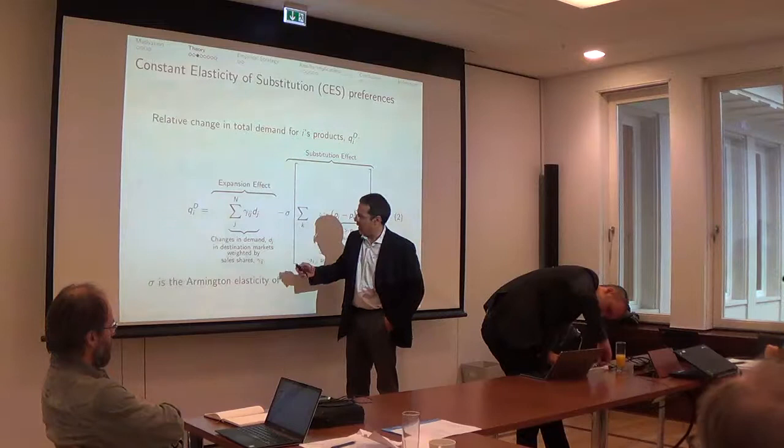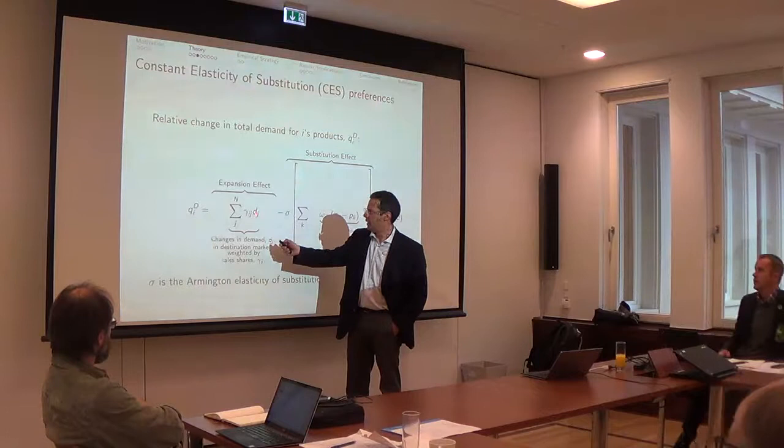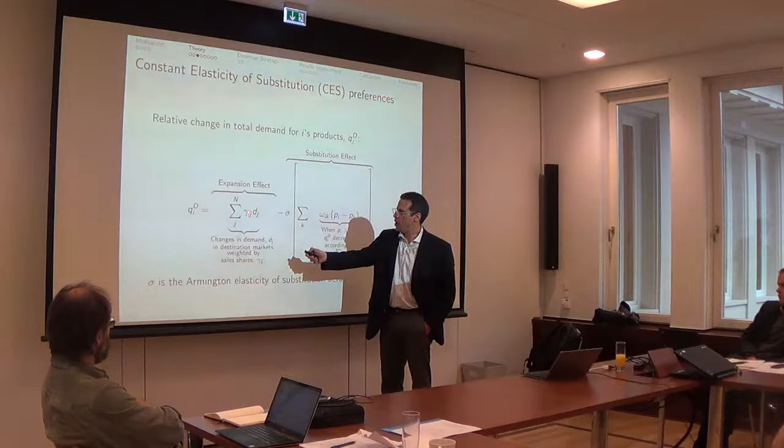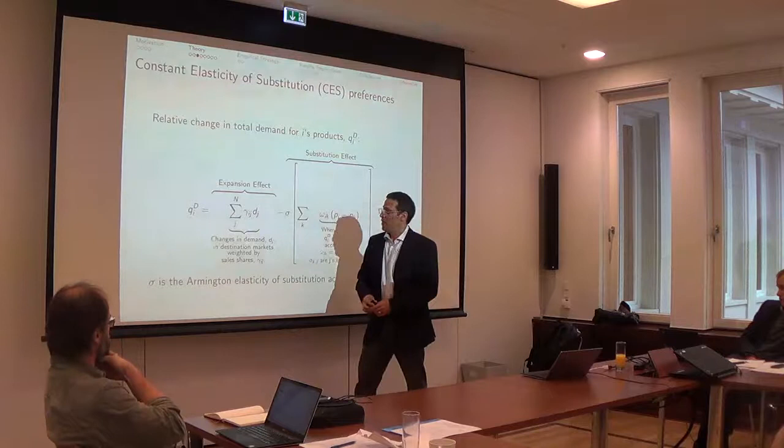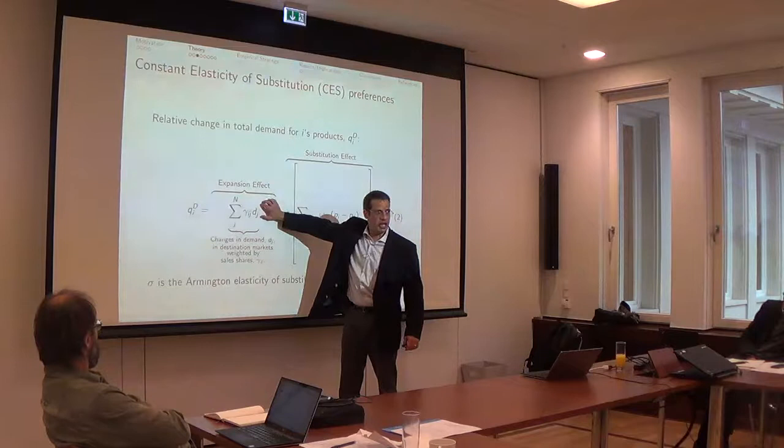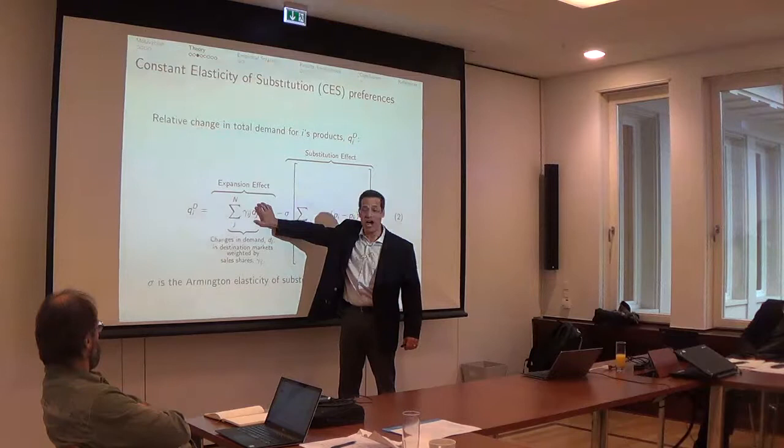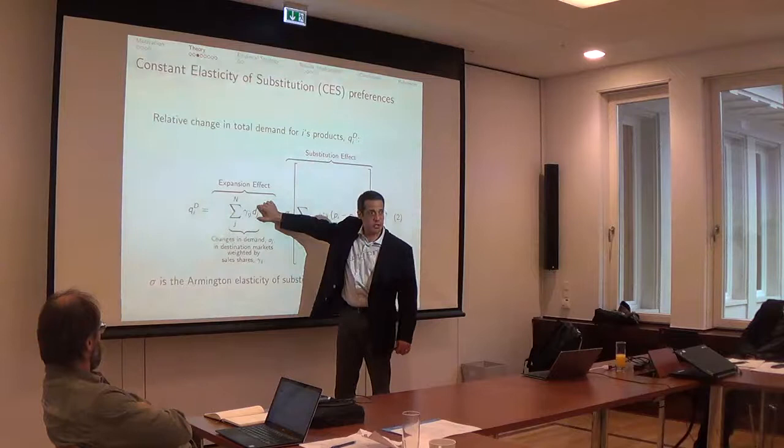What we have here is the changes in demand. So think the change of GDP per capita. And these are sales shares, this gamma here. So this is how much of the total production of country i goes to market j and that's a weight on the change in GDP per capita in country j. So think about this as the US, this is China. If there is a big percentage change in GDP in China and the sales shares of the US in China is large, the expansion effect is quite large.